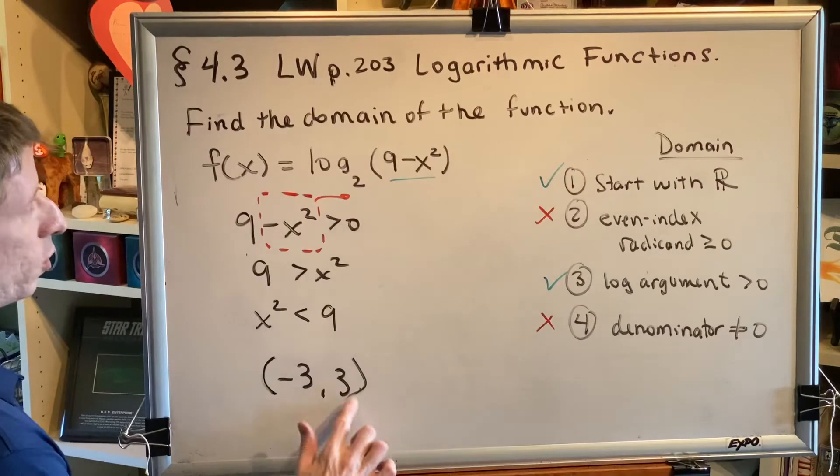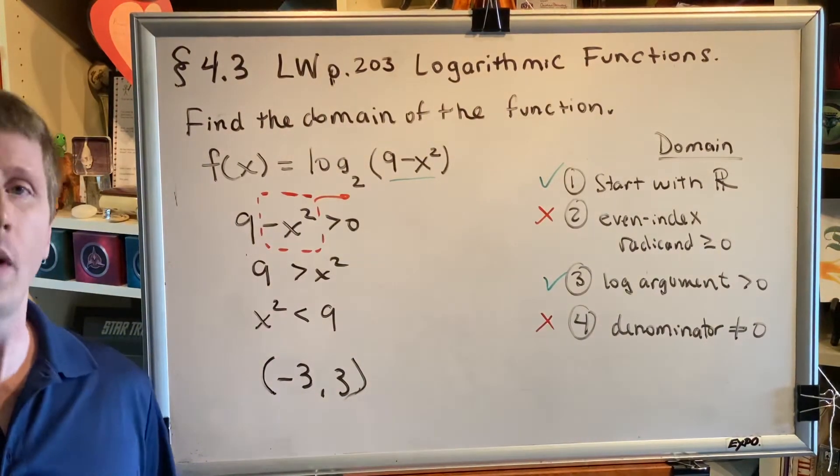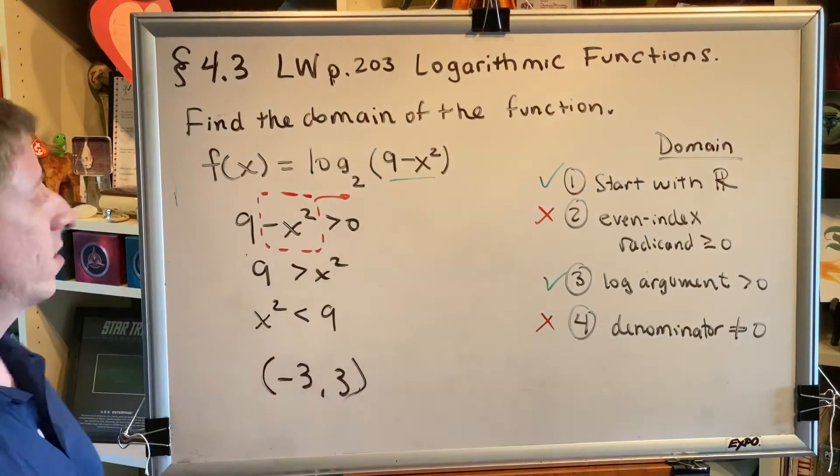If you are only interested in the values between negative 3 and 3, for example, like 2, when you square it, you get 4, which is less than 9.